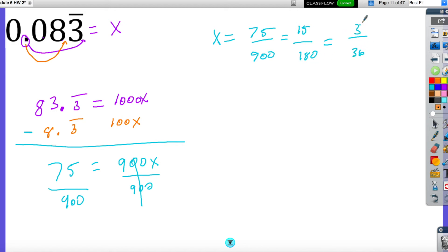And one more time, I can divide these both by 3 now. So 3 divided by 3 is 1, and 36 divided by 3 is 12. And if you have a calculator and you do 1 divided by 12, that will give you 0.083 repeating.